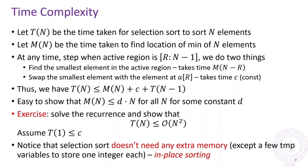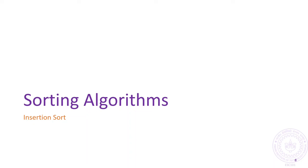A very nice property of the selection sort algorithm is that it is what we call an in-place sorting algorithm. This means that selection sort can take an unsorted array of N elements and sort it without allocating too much additional memory — say O(N) memory. This is opposed to some other sorting algorithms which we shall see later, which first create an empty array of N elements before creating the sorted array. Those algorithms would not be considered in-place algorithms, but selection sort is an in-place algorithm.